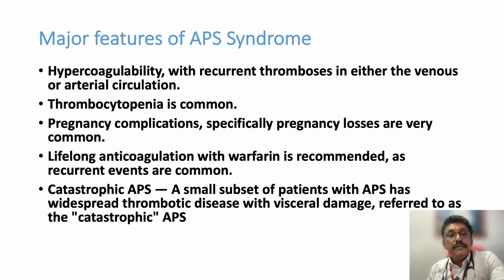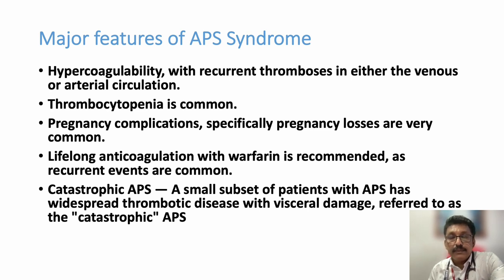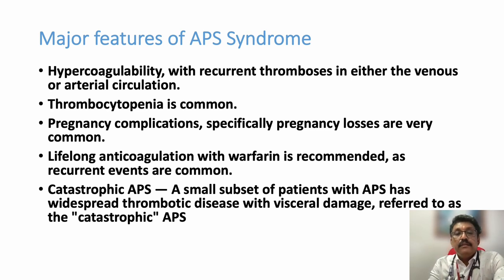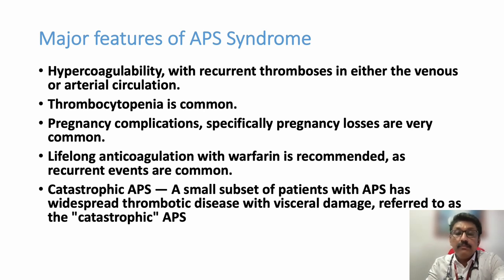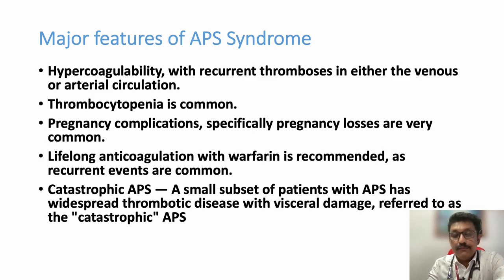There is a condition called catastrophic APS. Catastrophic APS means the patient develops severe widespread thrombosis with sudden onset, and the patient mostly may die during the acute attack itself. Because most of the time this may not be diagnosed in peripheral centers, the patient deteriorates very fast.